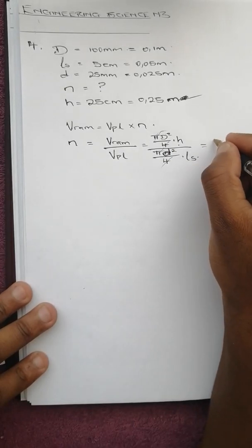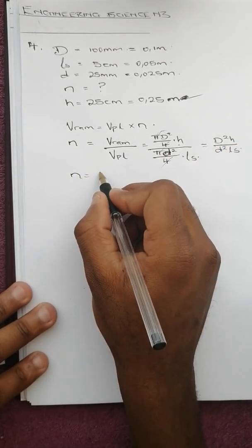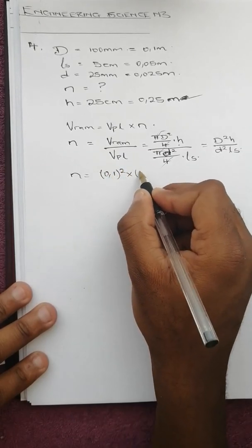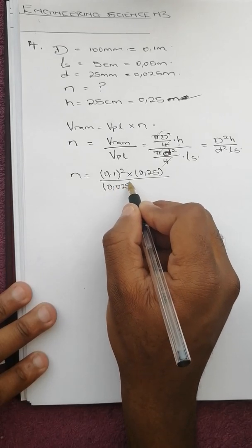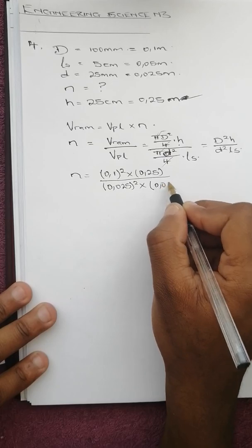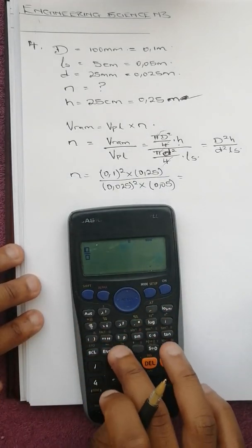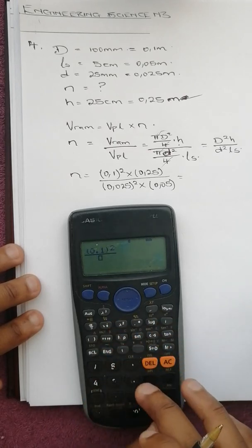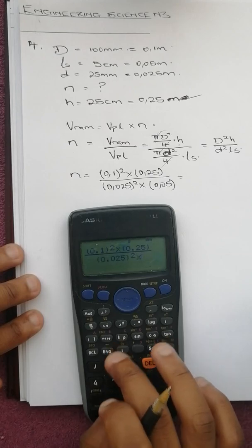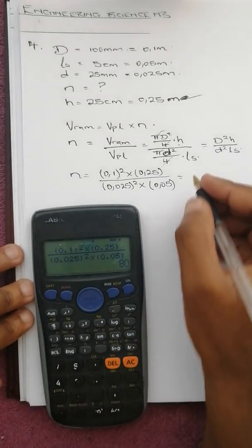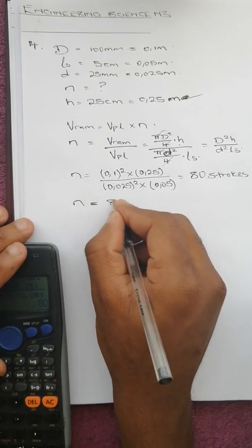We substitute what we have: 0.1 squared times 0.25 over 0.025 squared times 0.05. This gives us 80 strokes. So n equals 80 strokes.